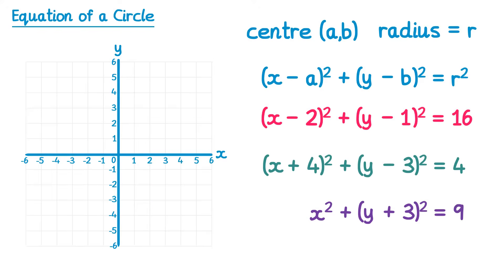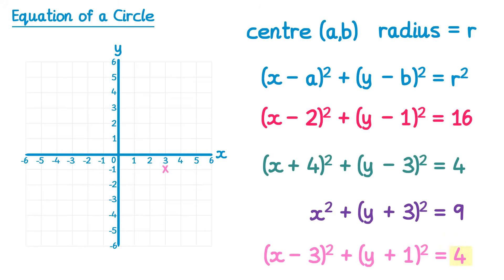You may also need to be able to draw a circle given the equation. If we had the equation (x minus 3) all squared plus (y plus 1) all squared equals four, we do the opposite signs to get the center, so the center is at positive three, negative one. On the right hand side we have four — this equals r squared, so if we square root four we find the radius is two, and we just draw it with a radius of two.